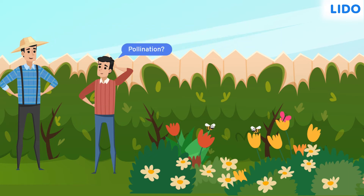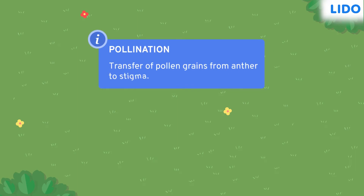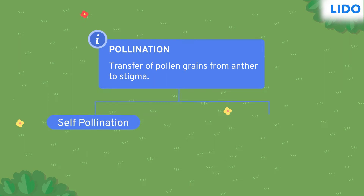Roshan asked his father, 'What's pollination?' Pollination is a process in which the pollen grains of a flower are transferred to the stigma of a flower. It is of two types: self-pollination and cross-pollination.